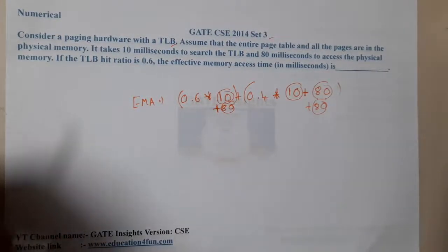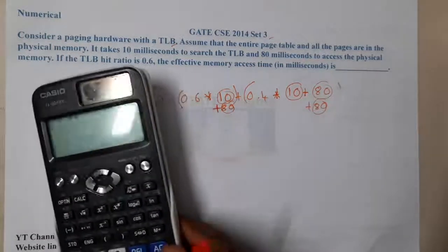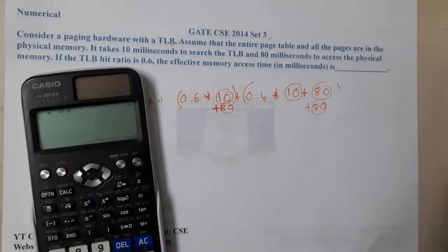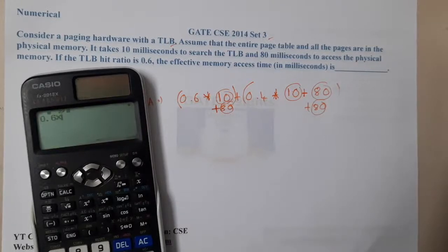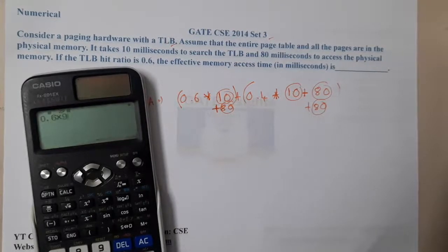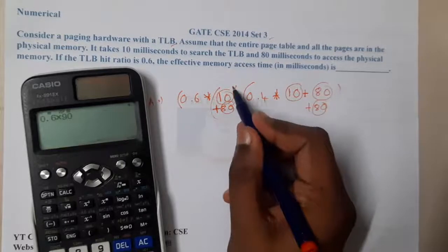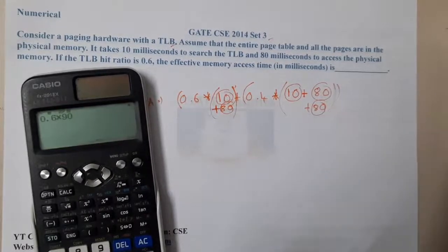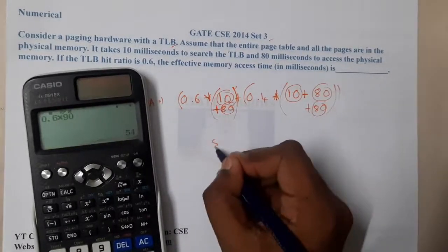If we just calculate it, it is 0.6 into 90, so you need to add these values, which equals to 54.